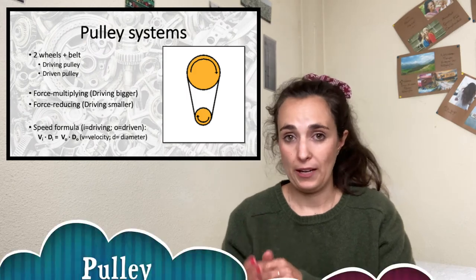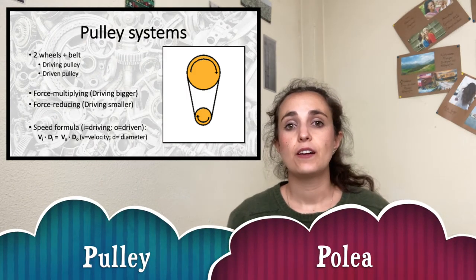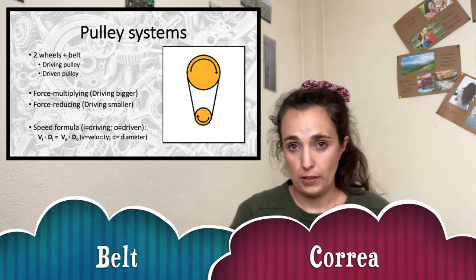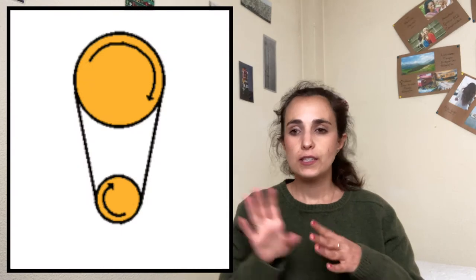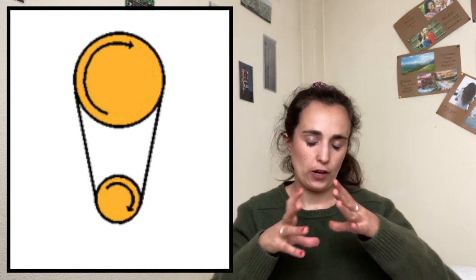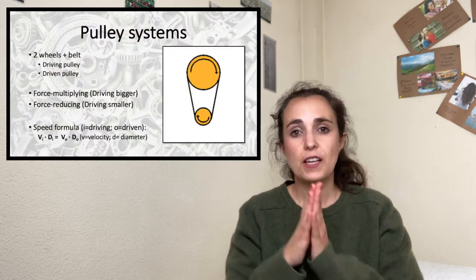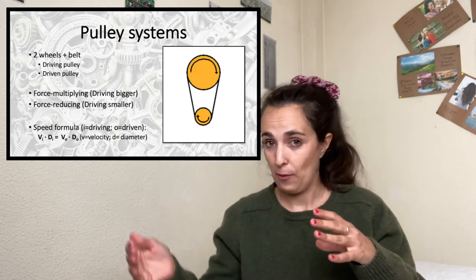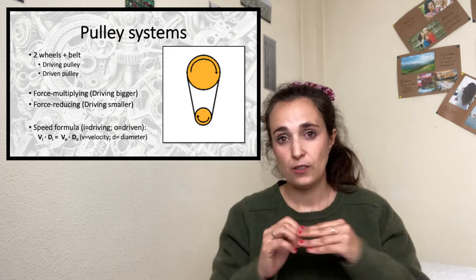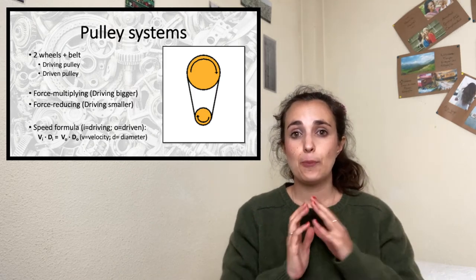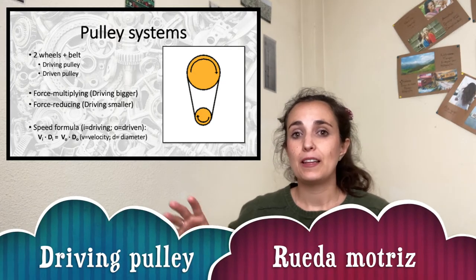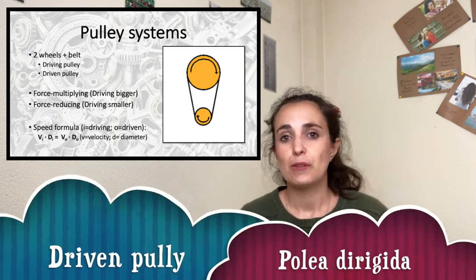Let's start with pulleys. Pulleys are usually composed of two or more wheels and a belt that joins the wheels. Usually there is a pulley that starts the movement, and the other pulley will just move because of the belt joining both pulleys. The pulley that starts the movement is called the driving pulley, and the pulley that moves because of the belt is called the driven pulley.